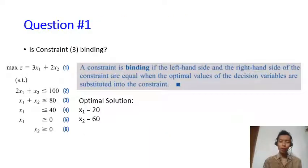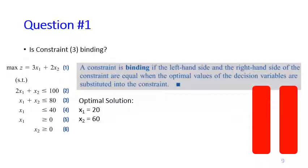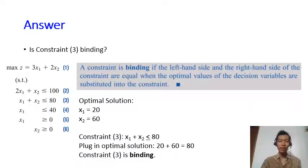So here are the questions to check your understanding. As usual, I will give you the answer after the pause of the video. So is the third constraint binding or not? The answer is constraint 3 is a binding constraint. Because when you plug in the optimal solution, the left-hand side equals to the right-hand side. Therefore, constraint 3 is a binding constraint.